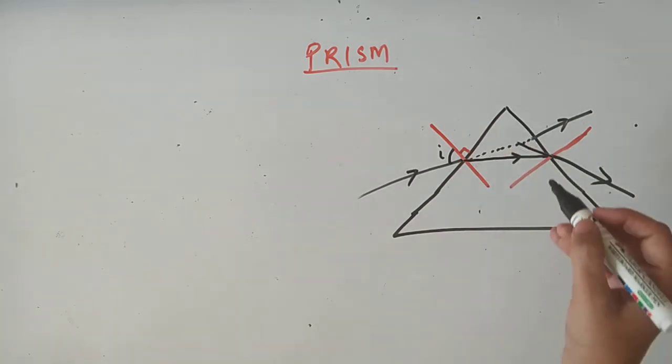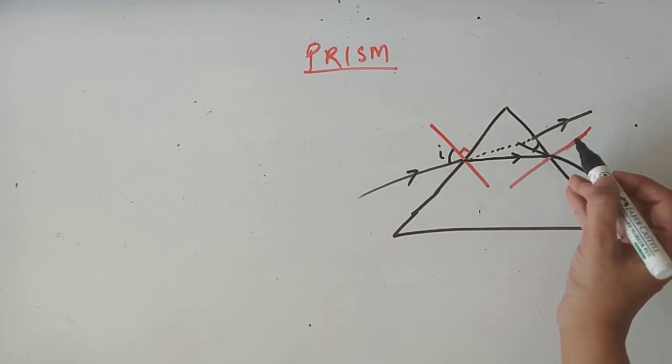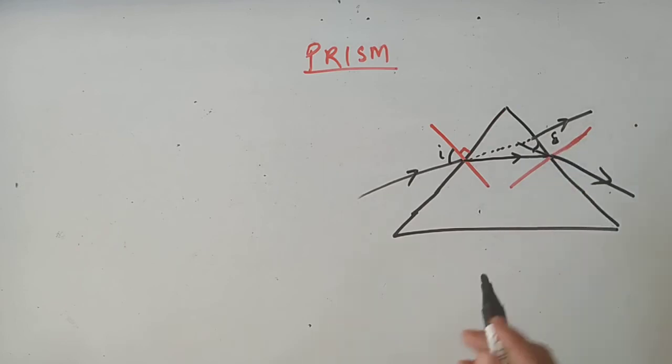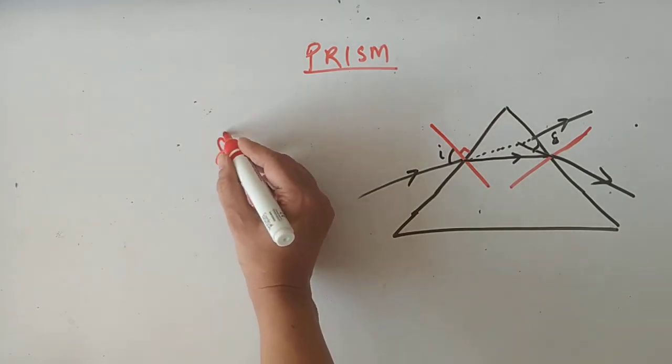They are not parallel, but they are intersecting at one angle and make an angle. This angle is known as the angle of deviation.